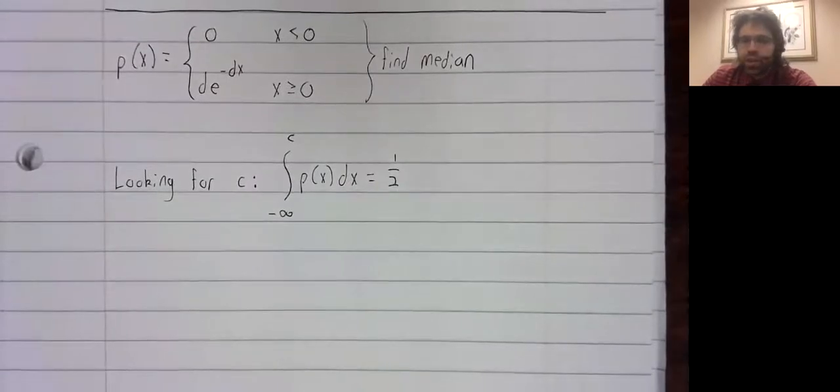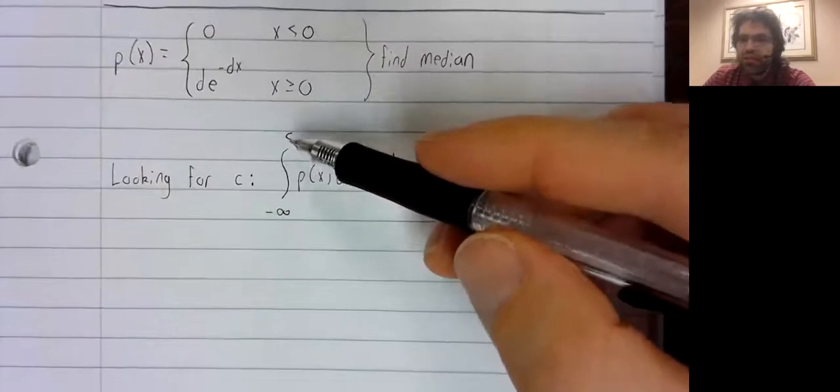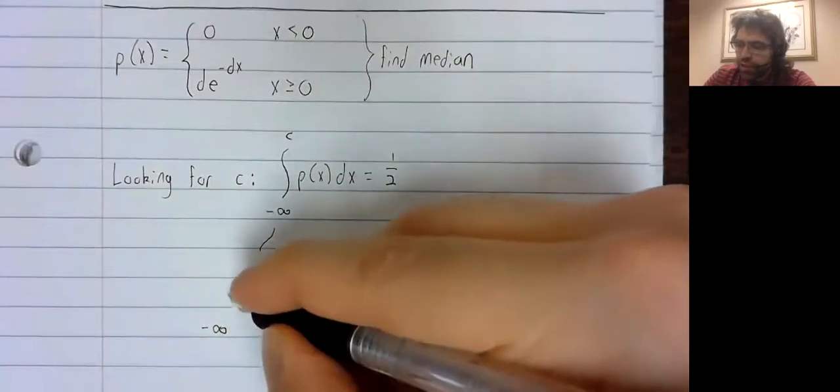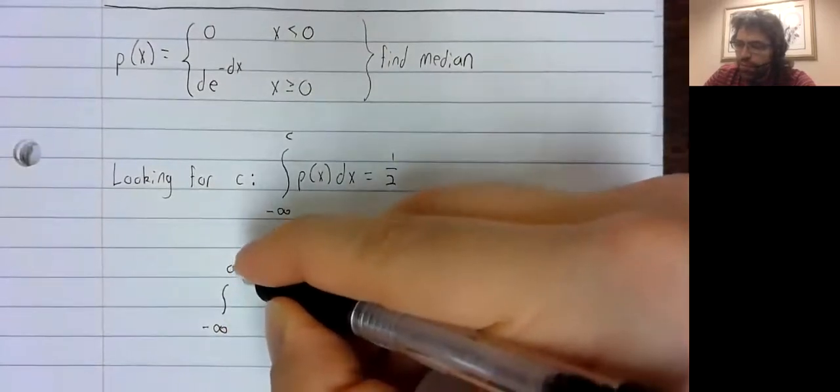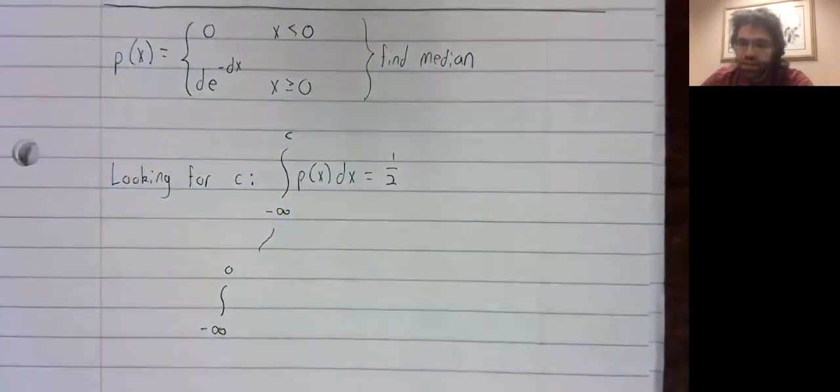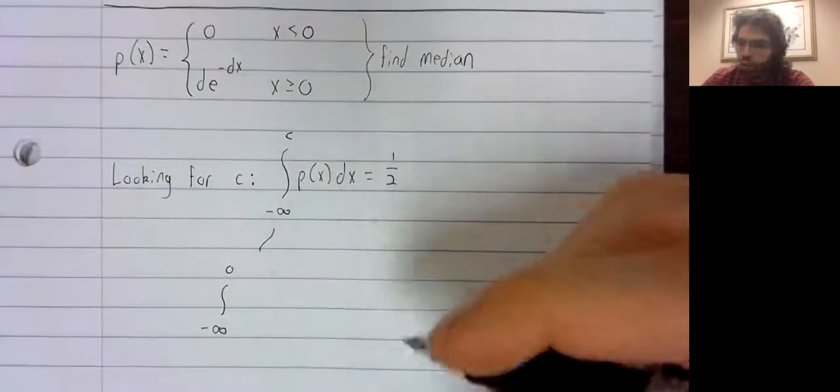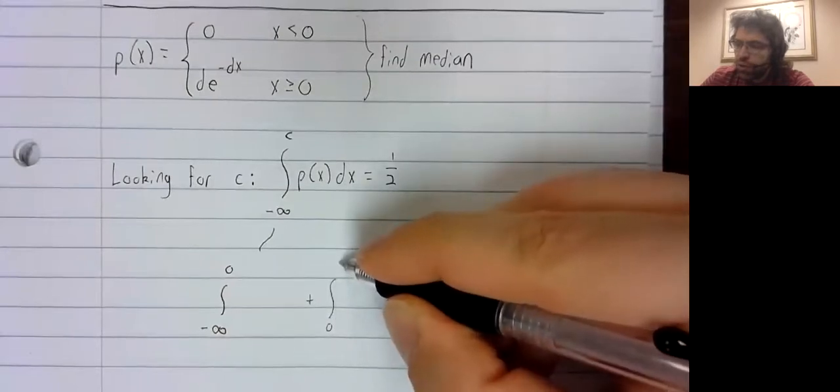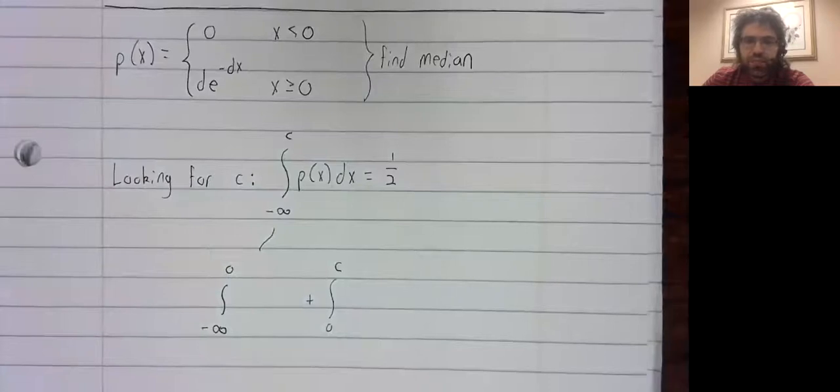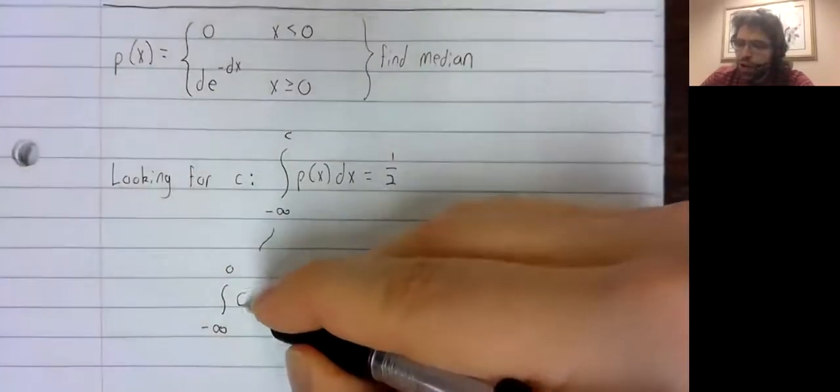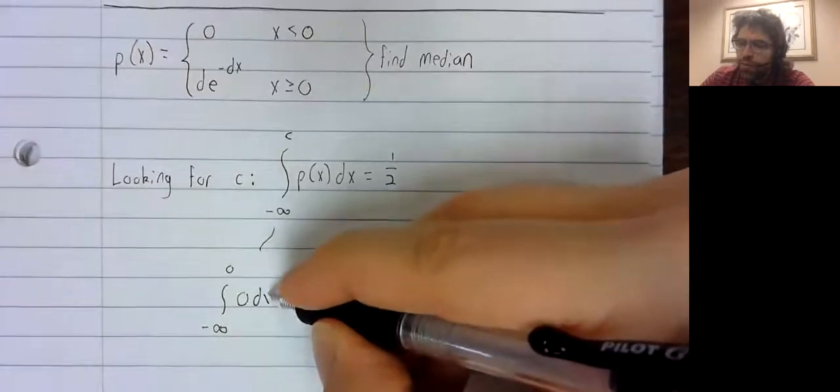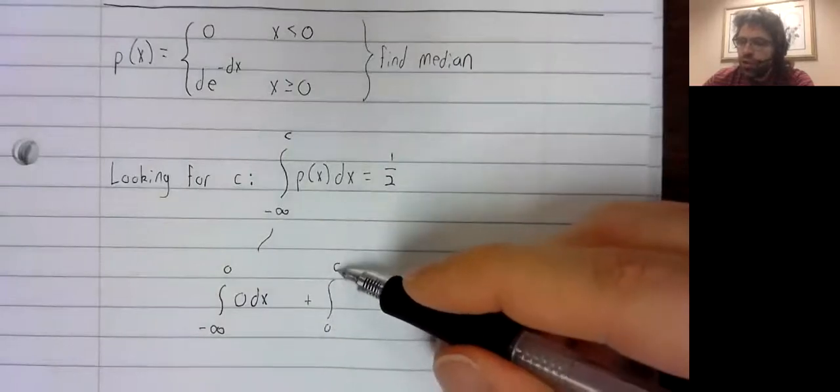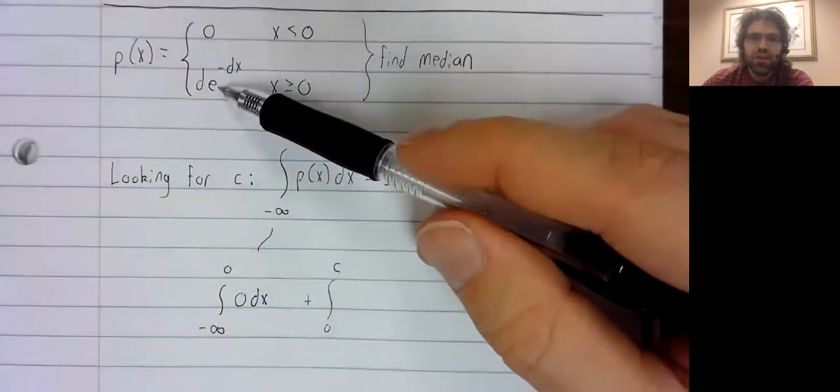The reason I wanted to stress that C has to be positive is that we're now going to break this integral up into two pieces: the integral from negative infinity to zero, and then the integral from zero to C. From negative infinity to zero, P of X is zero, and from zero to C, P of X is this.